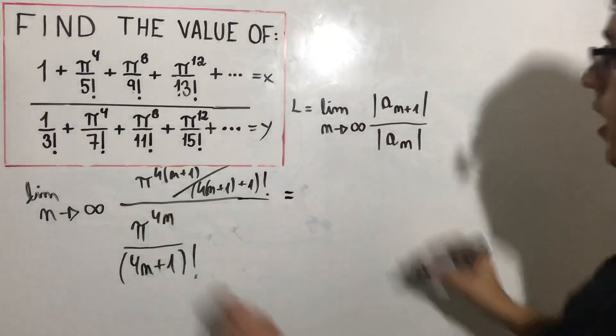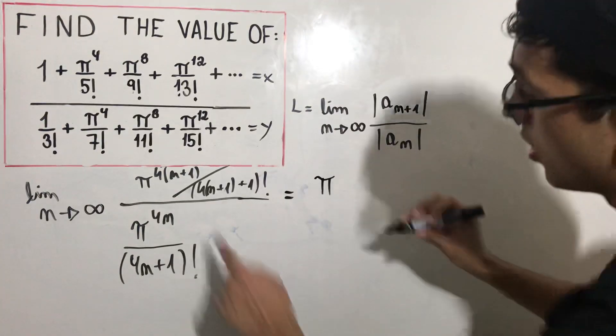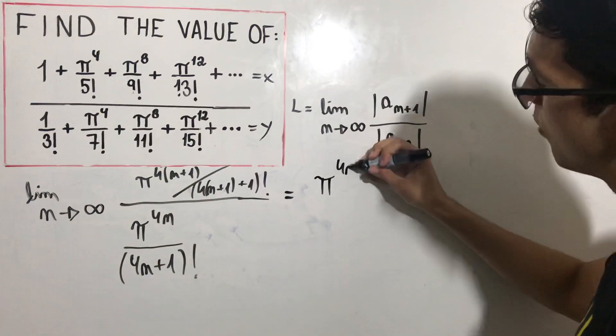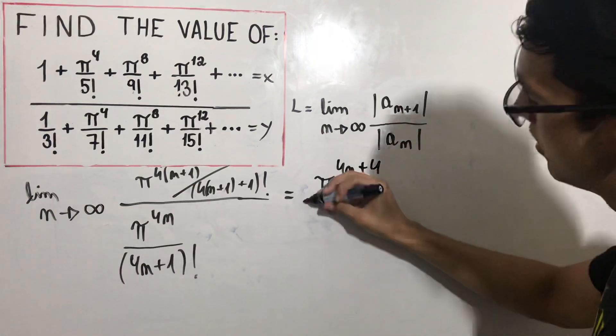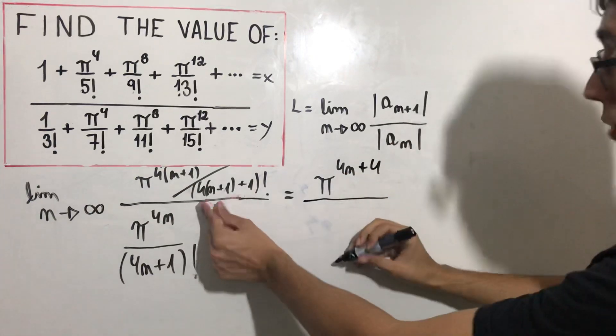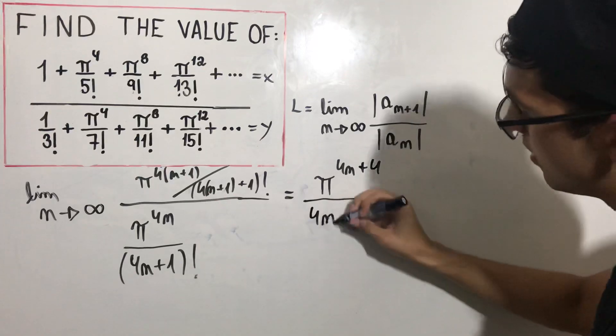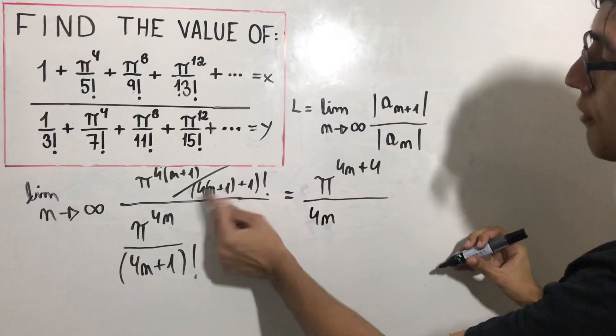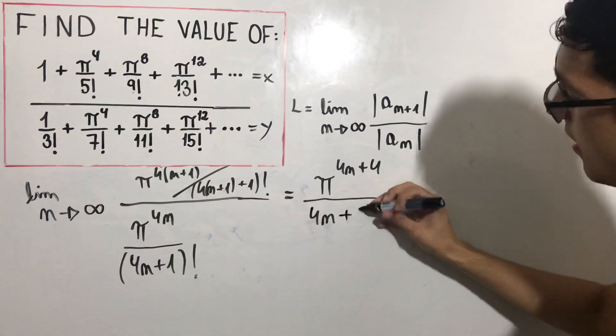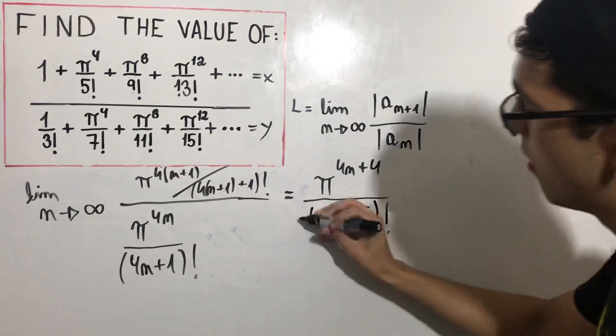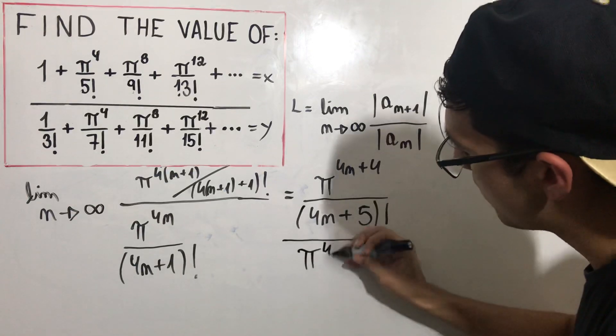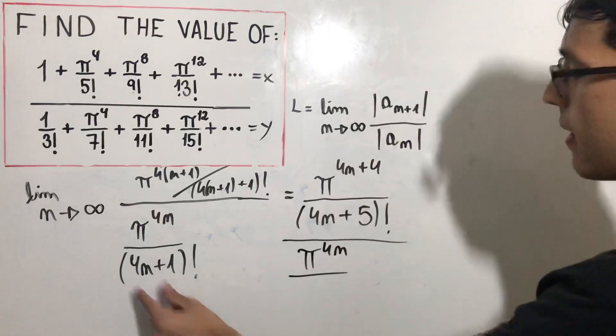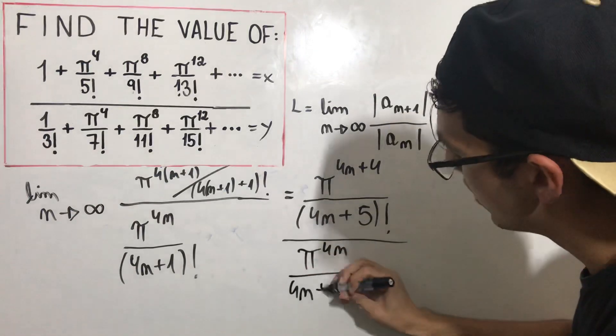This is equal to π^(4n+4) which is π^4n times 4 plus 1, so 5 factorial, divided by π^4n divided by (4n+1) factorial.